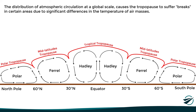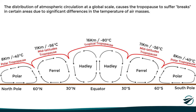The tropical tropopause is the highest of all, reaching altitudes of around 16 kilometers or 53,000 feet, and temperatures of minus 80 degrees Celsius. The mid-latitude tropopause is typically found at 11 kilometers or 36,000 feet, with temperatures around minus 56 degrees, though this varies depending on the season. And finally, the polar tropopause is the lowest of all, reaching altitudes of around 8 kilometers or 26,000 feet, and temperatures of minus 40 degrees.